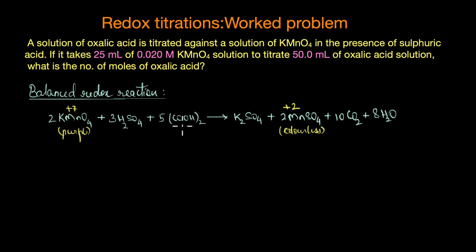The oxidation state of carbon in oxalic acid is +3 and it undergoes oxidation to +4 state in carbon dioxide. This is what the balanced redox reaction looks like. Now, coming to solving this question, the first step is to figure out the number of moles of KMnO4 solution used in the titration.